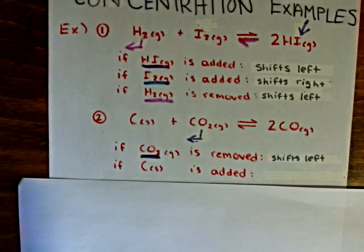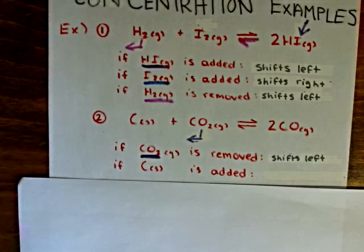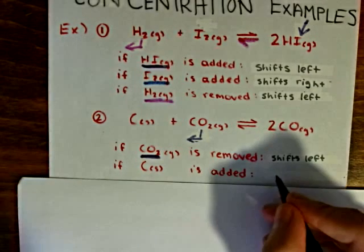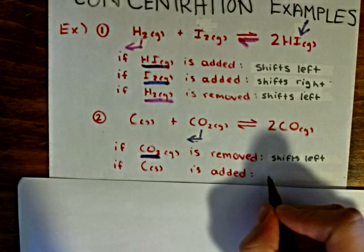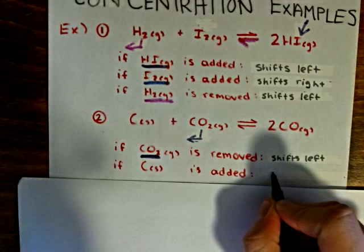If you recall, when we wrote our equilibrium expression, we didn't include solids and reactants in them. And this was because solids and liquids do not affect a chemical equilibrium. They will not shift a chemical equilibrium. So with that said, we can say that if we add more solid carbon, the equilibrium doesn't shift.